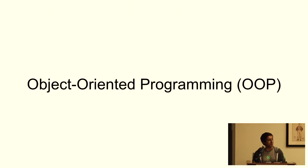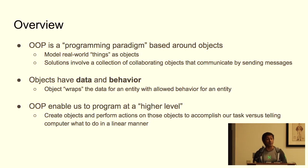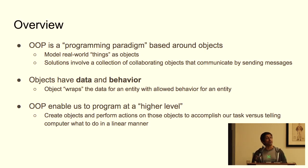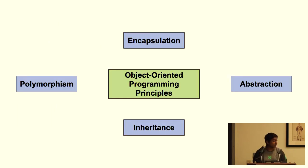Let's take a step back and talk about object-oriented programming in Python. Object-oriented programming is a paradigm based around objects — we try to model real-world things as objects. When we design a solution, it involves a collection of collaborating objects that talk to each other by calling each other's functions. Objects have data along with behavior, and OOP enables us to think at a higher level of abstraction versus telling the computer to solve things in a sequential linear manner. OOP has four main principles: encapsulation, abstraction, inheritance, and polymorphism.